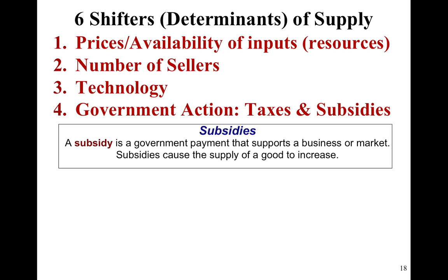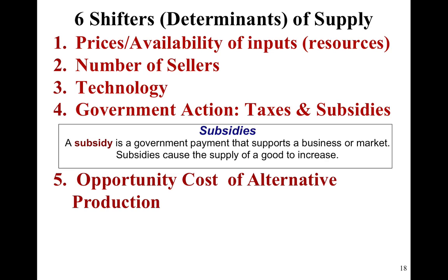Here's a definition for subsidy, just a reminder. The opportunity cost of alternative production — meaning, if I am LeBron James and I work for Kinko's, the opportunity cost for LeBron James to work for Kinko's is really, really high, probably much higher than any other Kinko's employee, seeing as he could go into the NBA and make millions of dollars in contracts and celebrity endorsements and things of that nature.